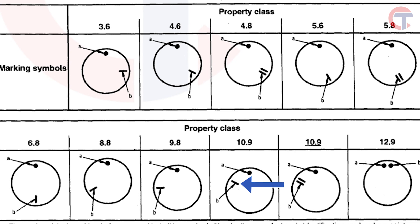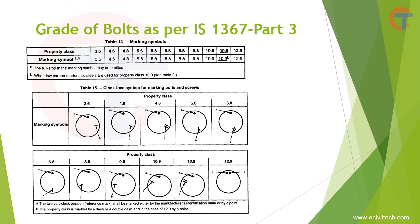Similarly, a single line is used for the 10.9 grade bolt as there is no 10.6 or 10.8 grade bolt. If you are in the procurement department or are a site engineer, you need to memorize all these markings. You can pause the video now to study the markings with respect to their grades.